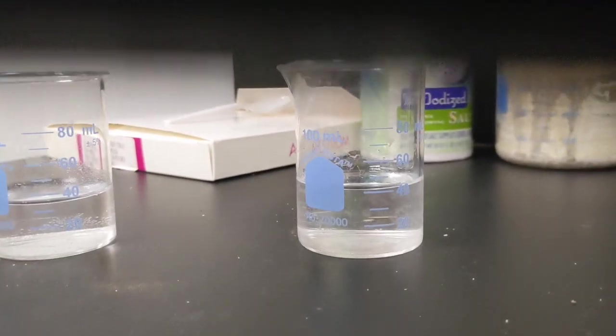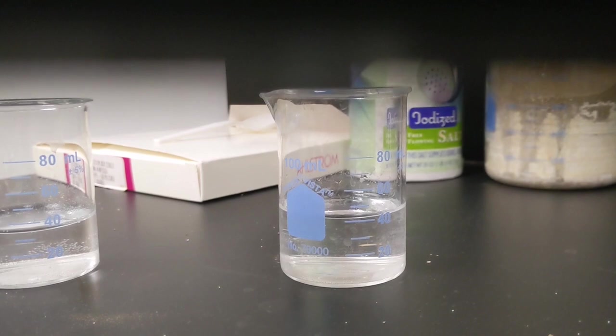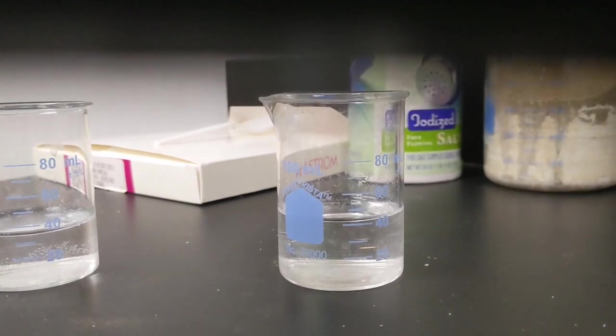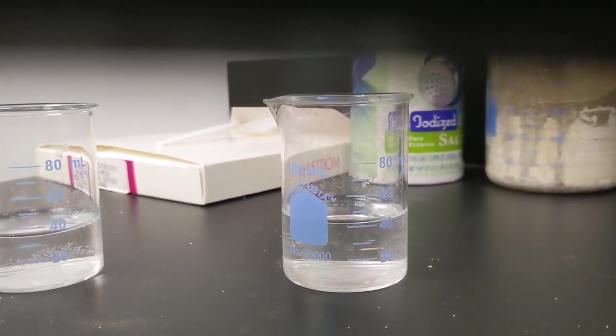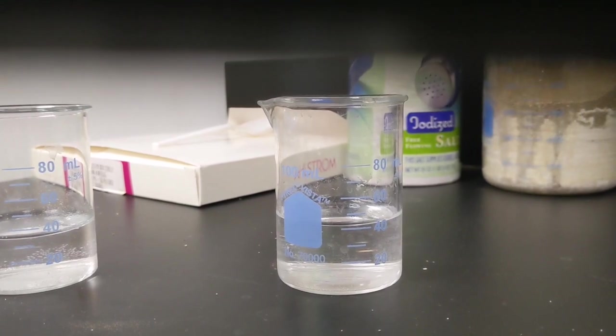Our goal here is to use the same type of beakers and the same amount of water so that when we test the different distances on the Bunsen burner from the water, we can have everything constant except the distance, which is going to be our variable.